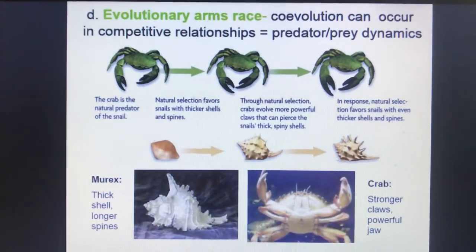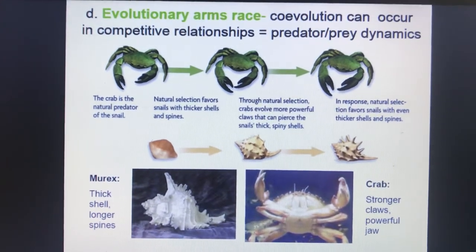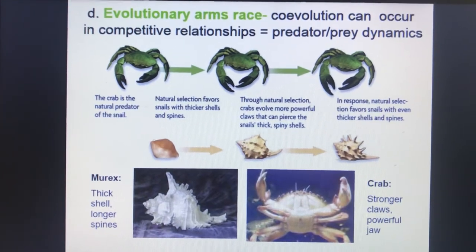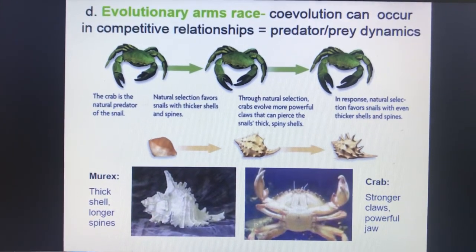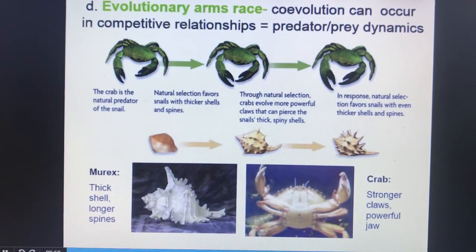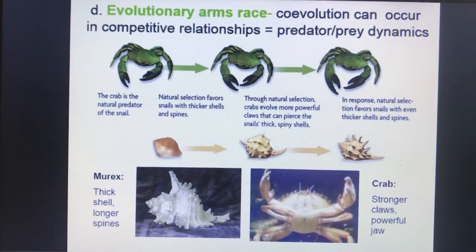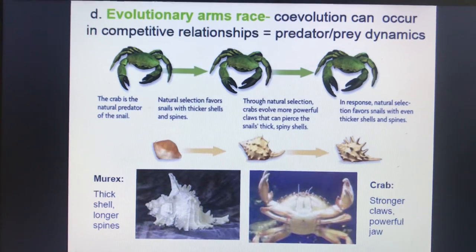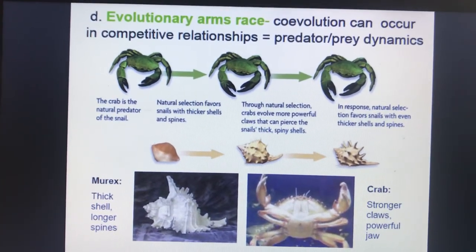There is also an amazing evolutionary trait known as the evolutionary arms race, which involves predator-prey dynamics. The classic example is the murex versus the crab. The murex formed a very thick shell with very long spines, and the crab in response grew stronger claws and a more powerful jaw. As the spines increased, so did the claws' strength and the jaw's ability.